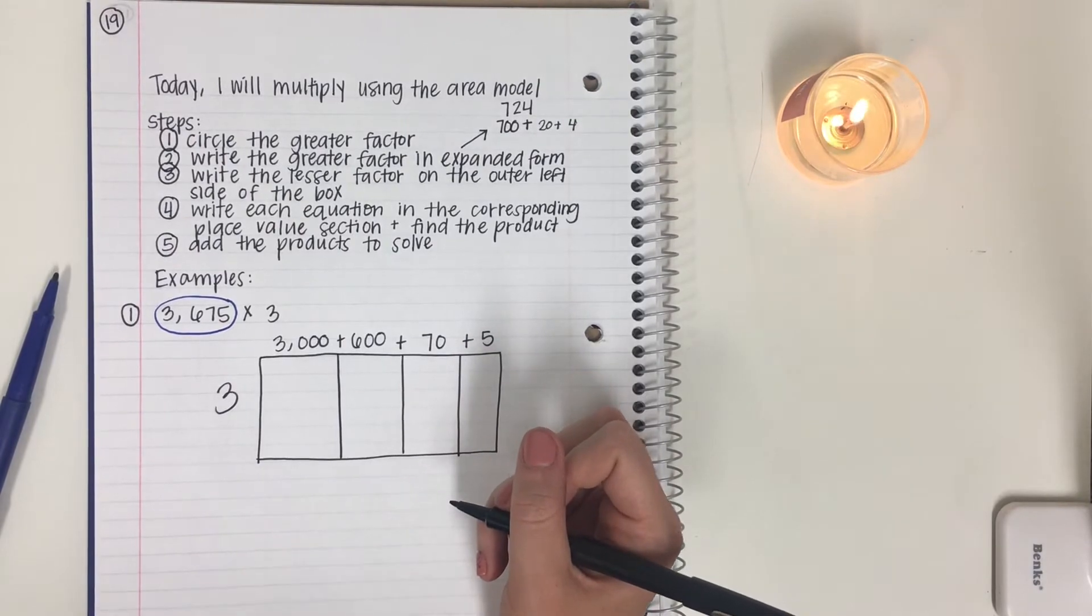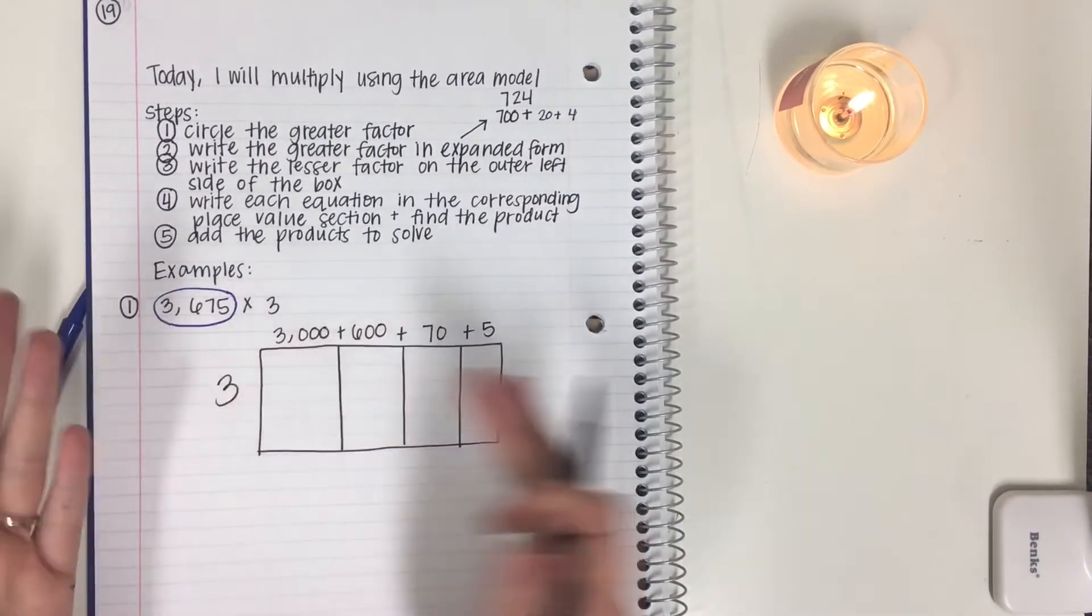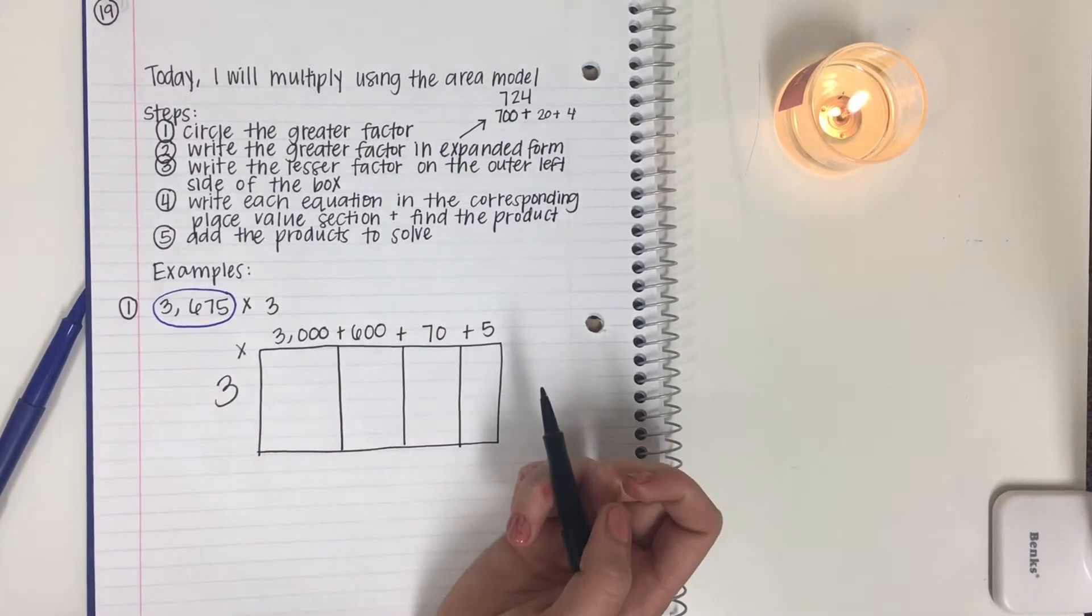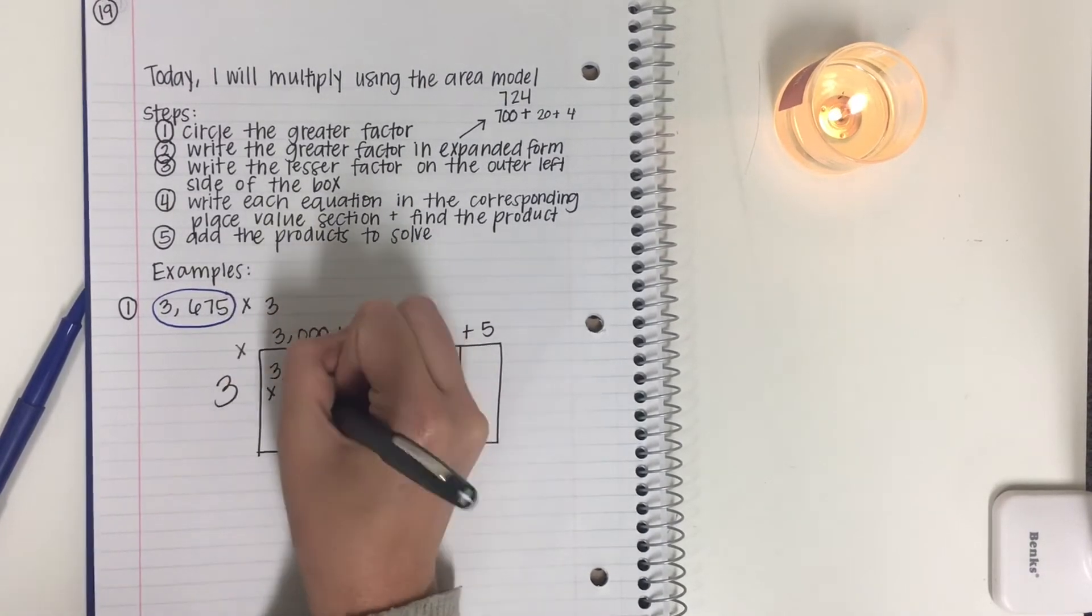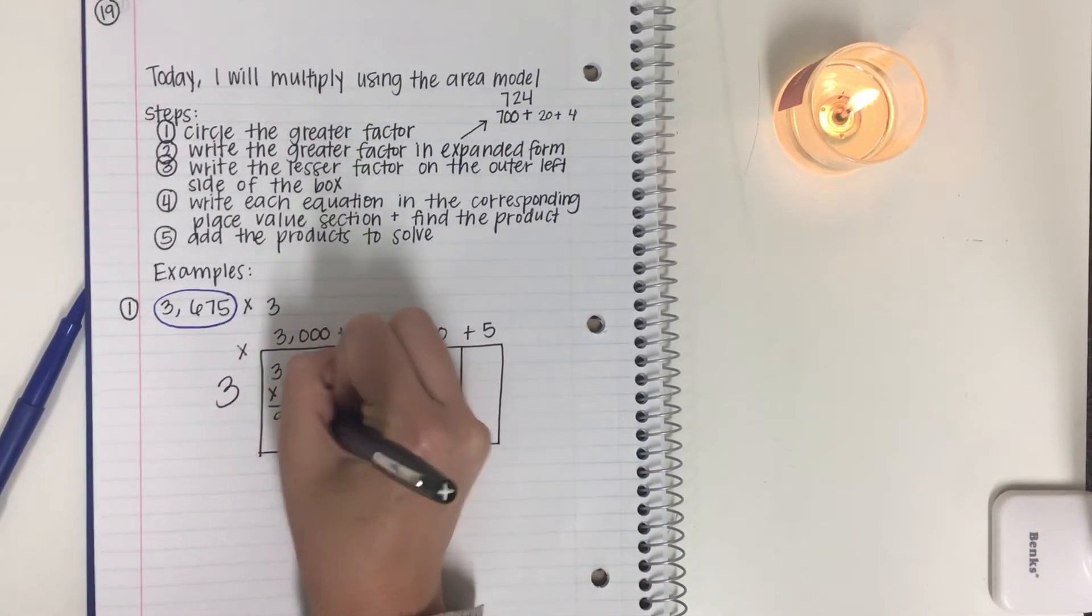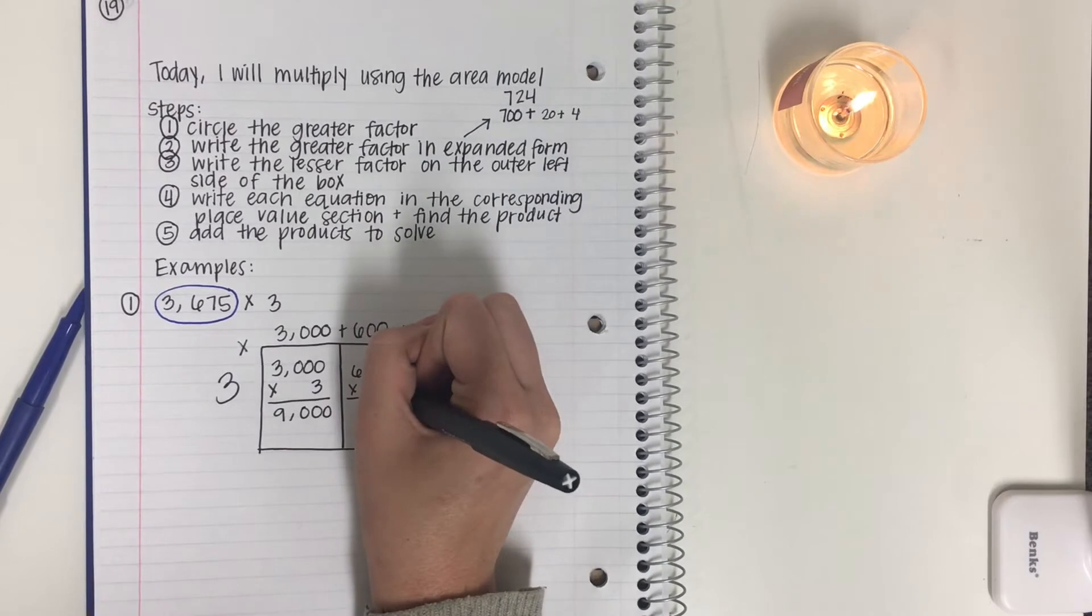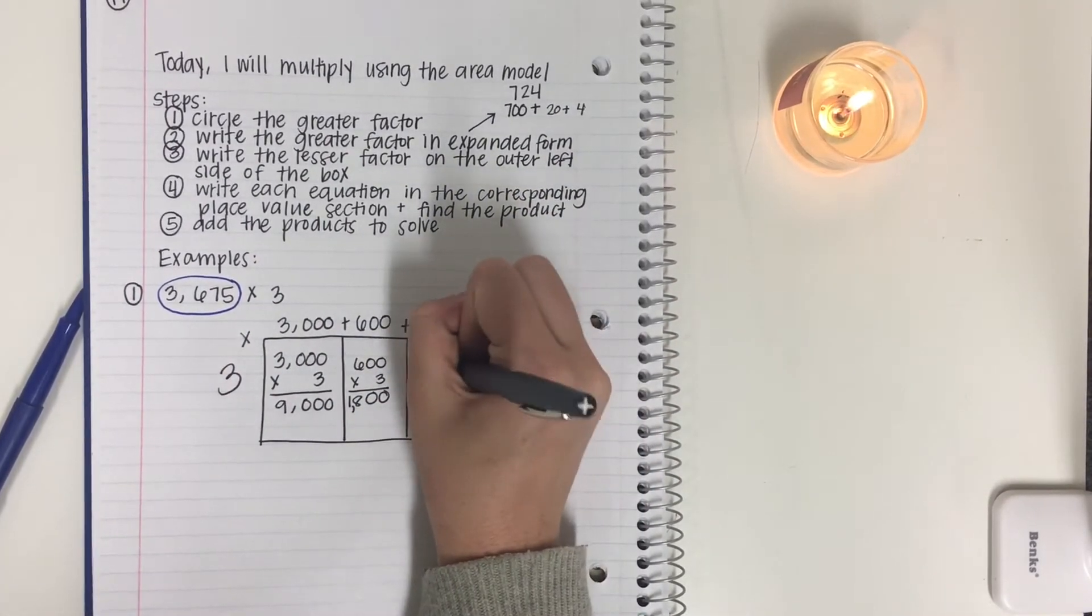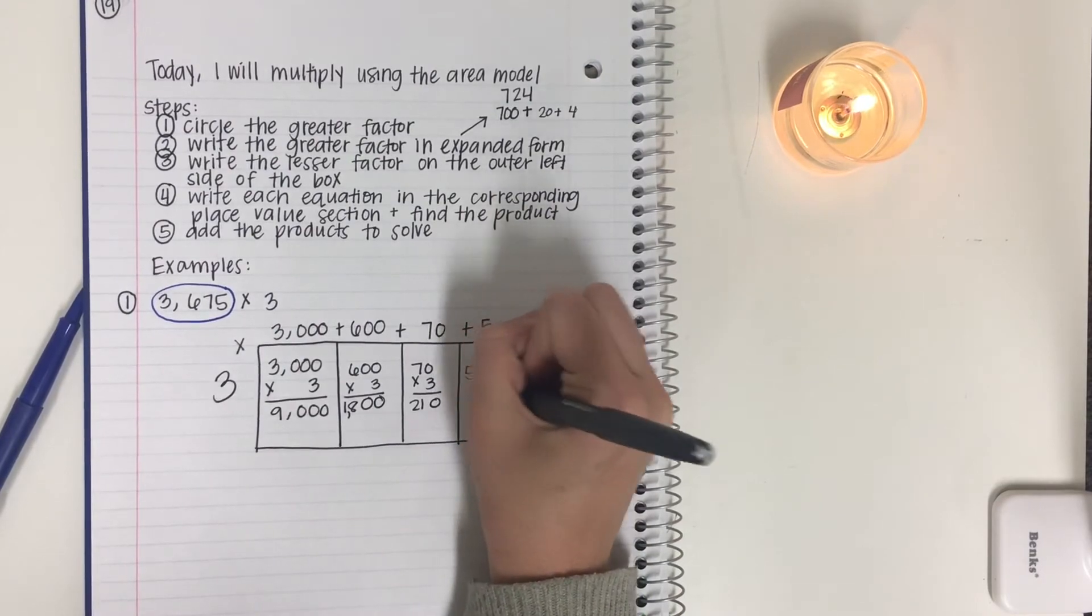Then we're going to do an equation. When we do an equation, we know it's going to be a multiplication equation because we're multiplying. That's the only kind of math you're going to be doing. So you're going to be multiplying each section and find the product. The product is the answer to a multiplication problem. So we're going to write 3,000 times 3. We know that any time we have zeros, we're just going to add those to the end. So 3 times 3 is 9,000. Now we've got to do 3 times 600. 3 times 0, 0, 18, 1,800. 70 times 3, 0, 21, 210. 5 times 3 is 15.